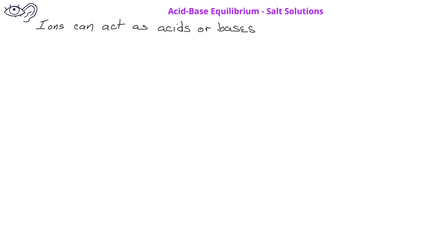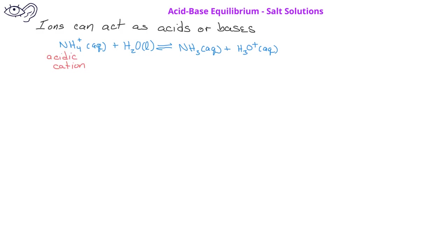In previous videos, we had the chance to see examples of ions that can act as acids or bases. For example, we've seen the ammonium ion in an ionization equation acting as an acid to produce ammonia and hydronium ions. The ammonium ion was therefore an acidic cation. We've also seen examples where the hypochlorite ion had an ionization equation with water to produce hypochlorous acid and the hydroxide ion. In this case, the OCl⁻, the hypochlorite ion, was a basic anion.